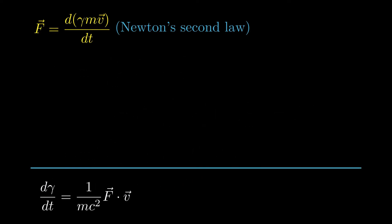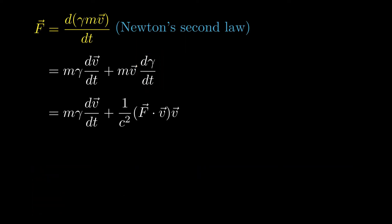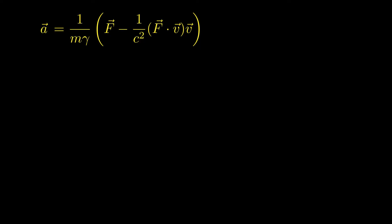Let's set that result aside and return to the relativistic version of Newton's second law. Expand the derivative, use our previous result for the time derivative of gamma, and then solve for the time derivative of the velocity. This is, of course, the acceleration vector.